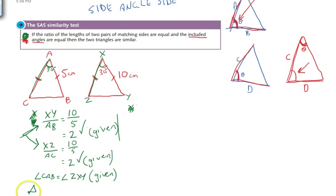Our last step here is to say that triangle ABC is similar to triangle XYZ. And the reason for that is side, angle, side.